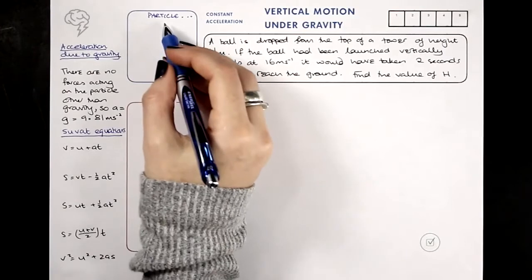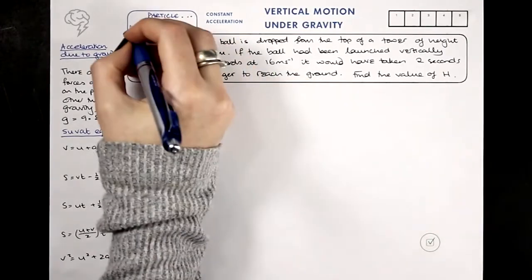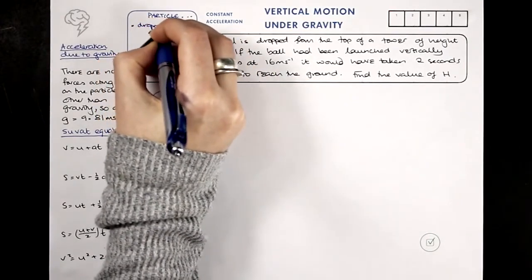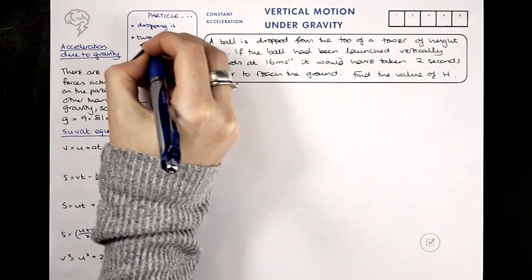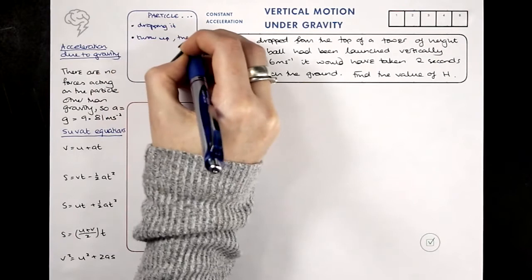If we've got a particle or something we're modelling as a particle, we could imagine dropping it from a height, just like literally letting go, or we could throw it up and then it'll go up and down.